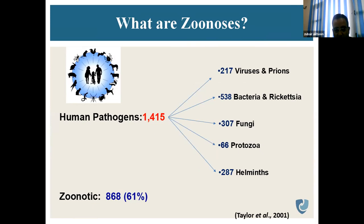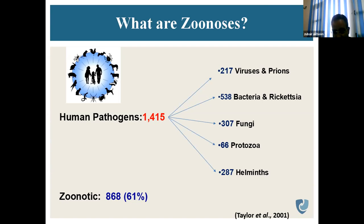Out of all human pathogens, 868 are zoonotic in nature — that means 61% are of zoonotic nature. They spread between animals and humans, and humans carry these pathogens from animals — that may be bovines, cattle, sheep, goats, even dogs — but they are zoonotic in nature.